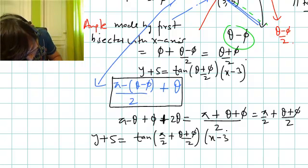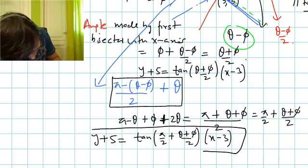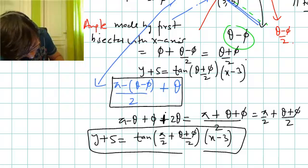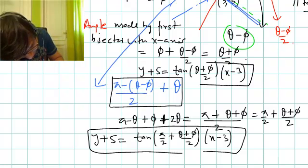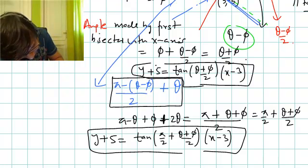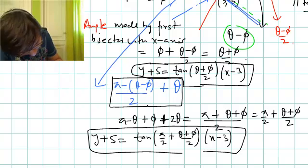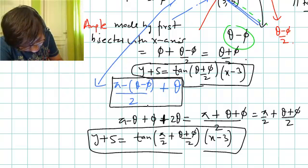Now you can compare these two bisectors with the given answer choices and check which options are correct.